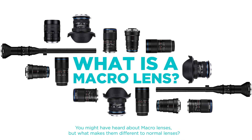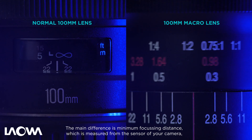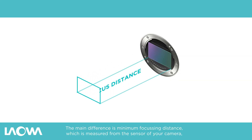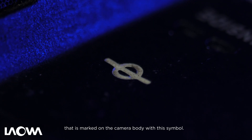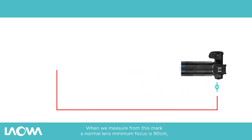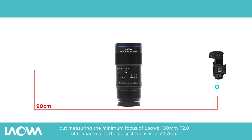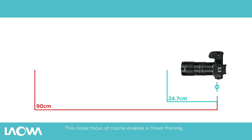You might have heard about macro lenses, but what makes them different to normal lenses? The main difference is the minimum focus distance, which is measured from the sensor of your camera. That is marked on the camera body with this symbol. When we measure from this mark, a normal lens minimum focus is at 90 centimeters, but the Laowa 100 millimeter f/2.8 ultra macro lens focuses as close as 24.7 centimeters.